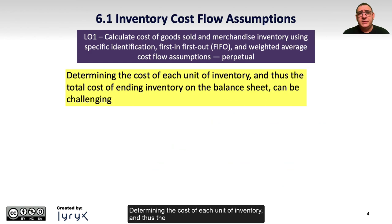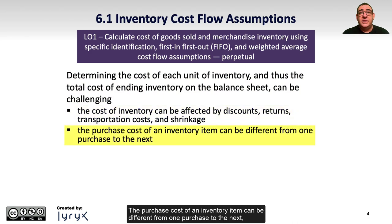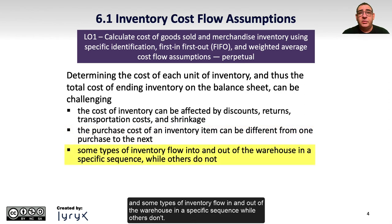Determining the cost of each unit of inventory, and thus the total cost of ending inventory on the balance sheet, can be challenging. The cost of inventory can be affected by discounts, returns, transportation costs, and shrinkage as we saw in earlier chapters. The purchase cost of an inventory item can be different from one purchase to the next, and some types of inventory flow in and out of the warehouse in a specific sequence while others don't.